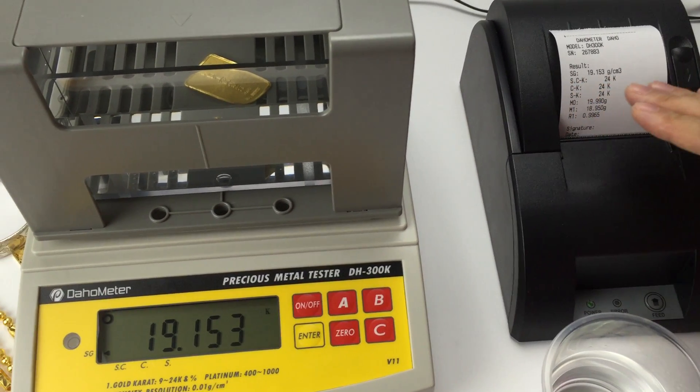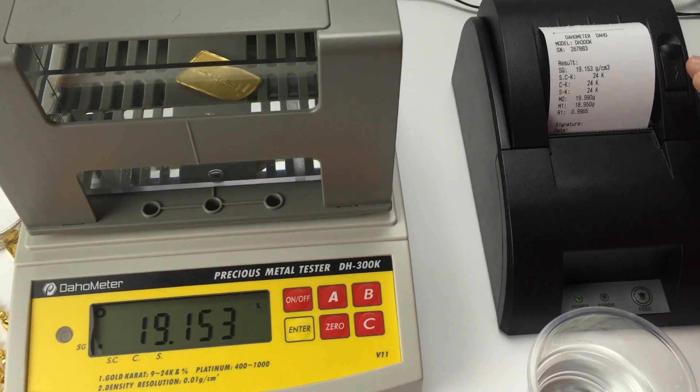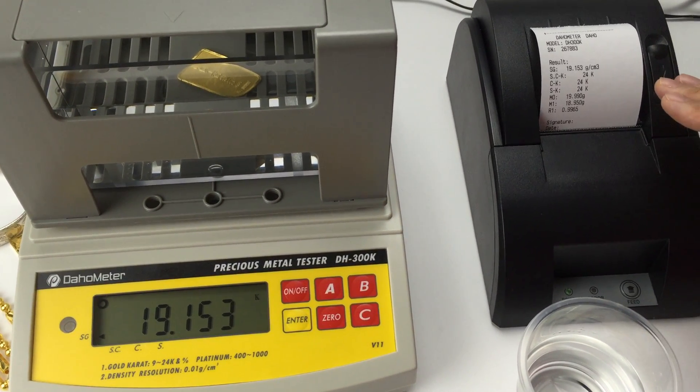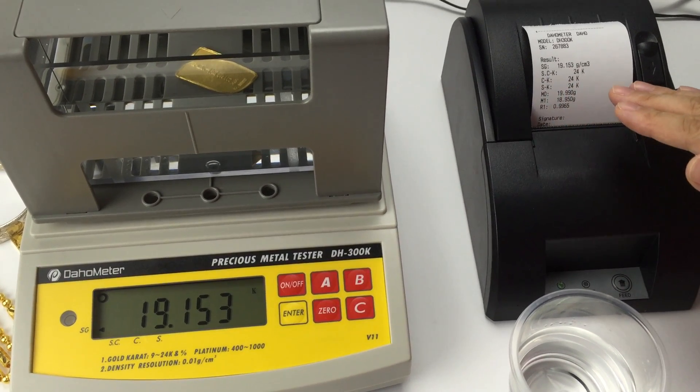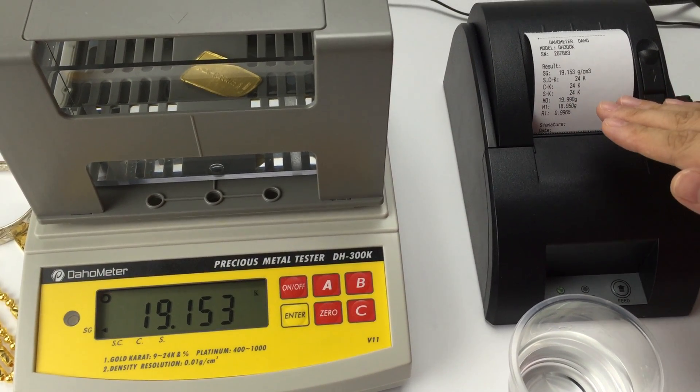S.C.K. 24. This is the K value for gold, silver, copper. C.K. It is the K value for gold, copper.